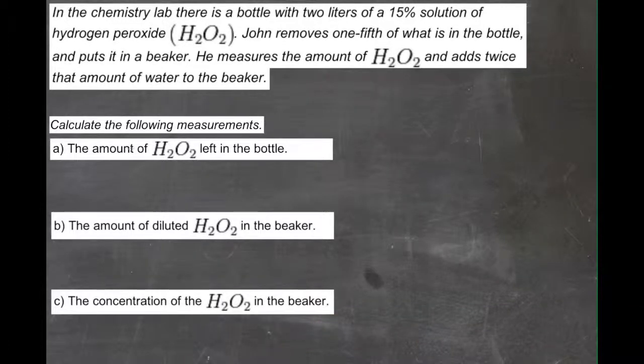We need to find the amount of H2O2 left in the bottle, then the amount of diluted H2O2 in the beaker, and then find the concentration of H2O2 in the beaker. So let's start with problem A here, the amount of H2O2 left in the bottle.